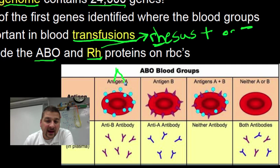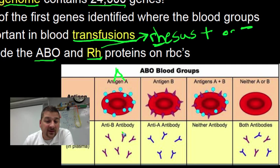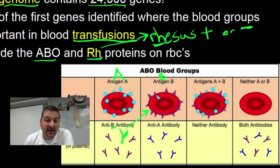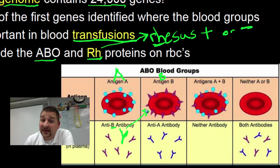If you have type A blood, that means you have little A proteins — represented in this chart as little circles on the surface of your blood cell — and you have antibodies in your immune system that are anti-B, against Bs. So if you put type B blood — which has B antigens — into a type A person, their immune system will have a reaction. Their white blood cells will attack those red blood cells. You get this immune response — not good. That person is going to be very, very sick.